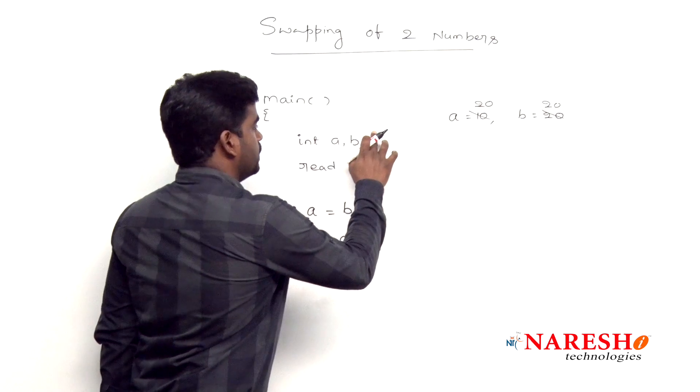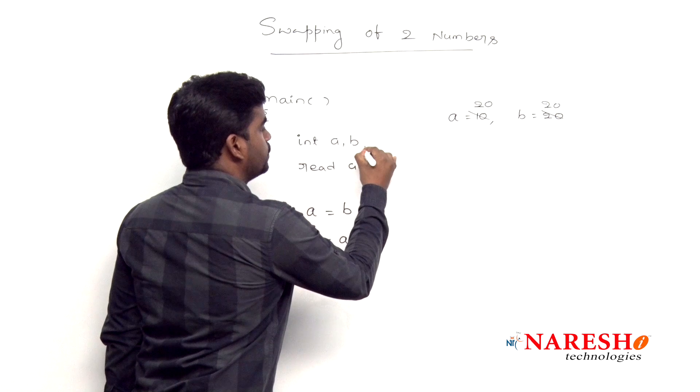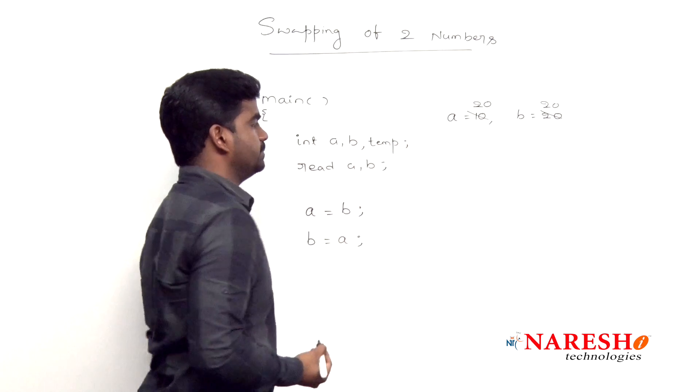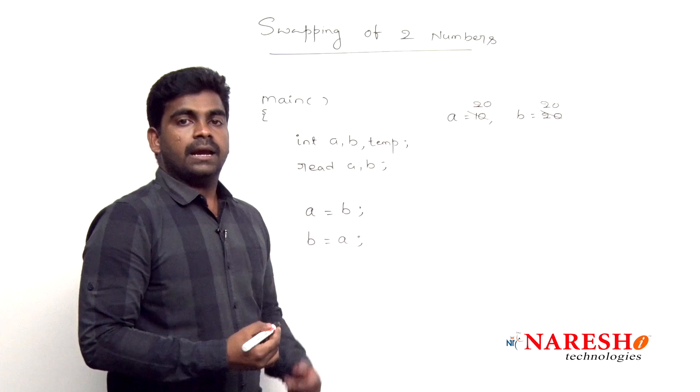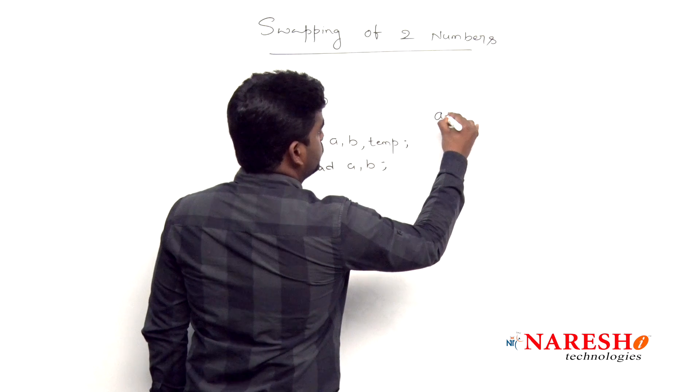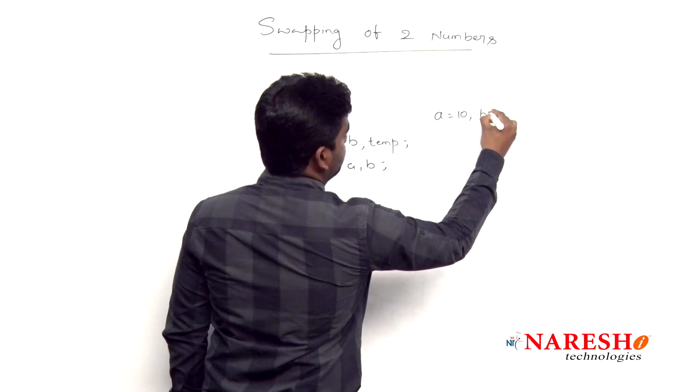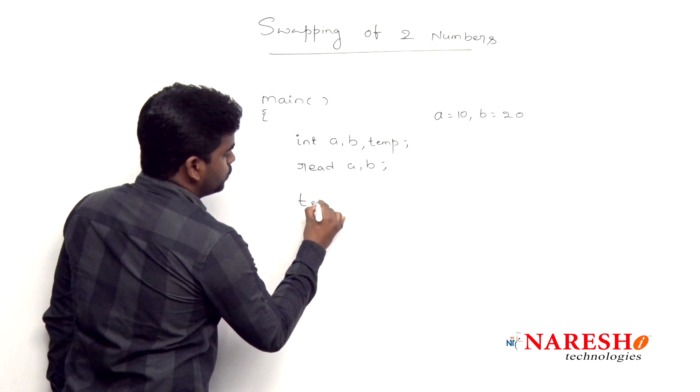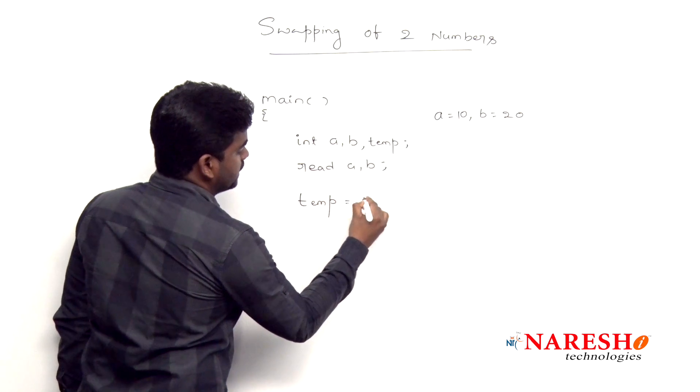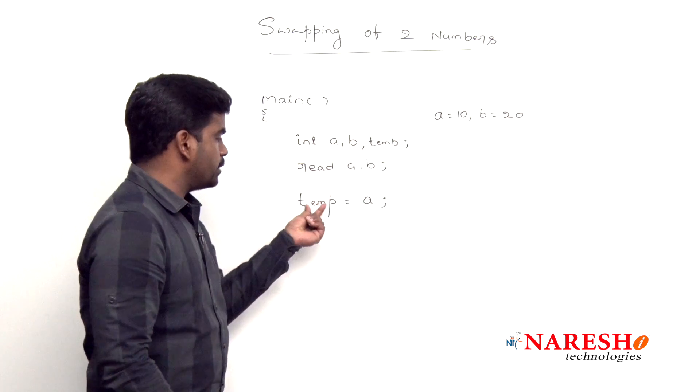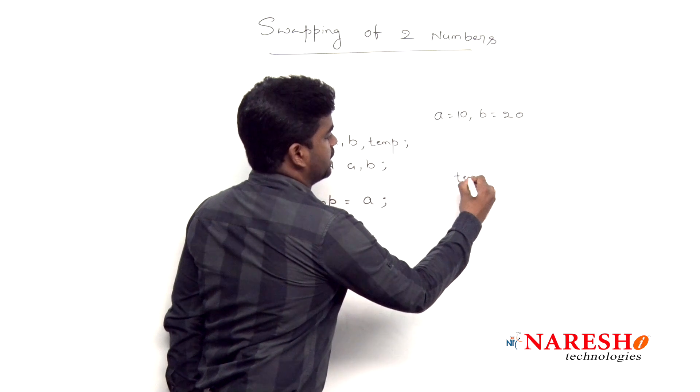Here, one temporary variable - any name you can use, but let's use the word temp. And then how to use it? Suppose a value is 10 and b value is 20. Now, first, what are we going to lose? We're collecting the a value into the temp. A value is 10, so we're going to store 10 into one temporary variable.